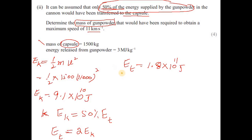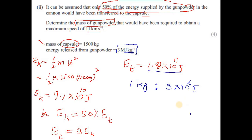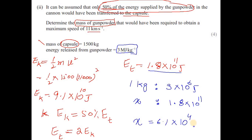The energy released from the gunpowder is 3 million joules per kg, meaning 1 kg releases 3 × 10⁶ joules. We need 1.8 × 10¹¹ joules total. By cross multiplication to find the mass x: x = 1.8 × 10¹¹ ÷ 3 × 10⁶ = 6.1 × 10⁴ kg. This is the mass of the gunpowder required.